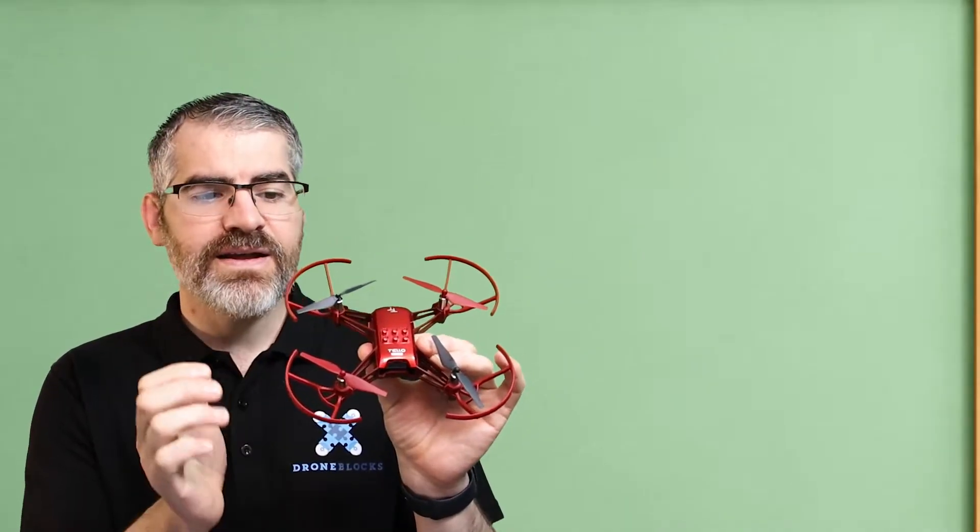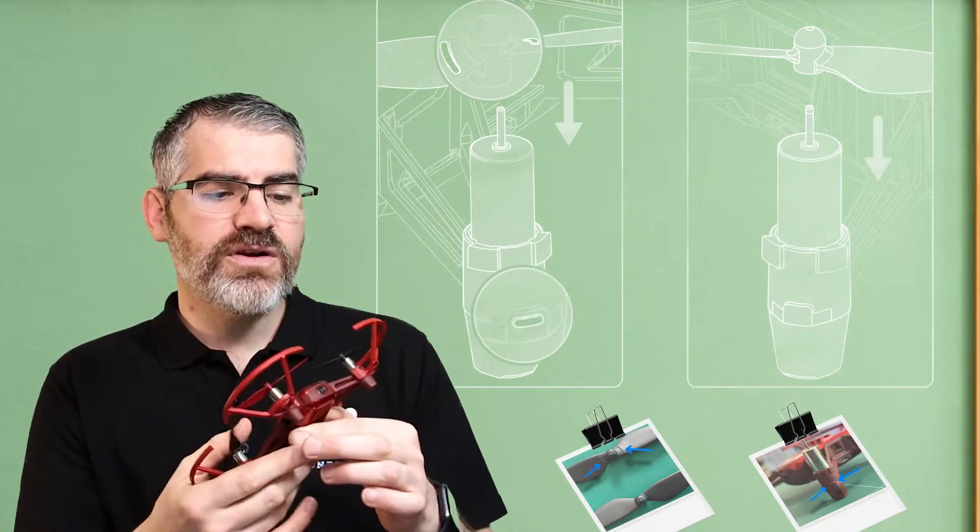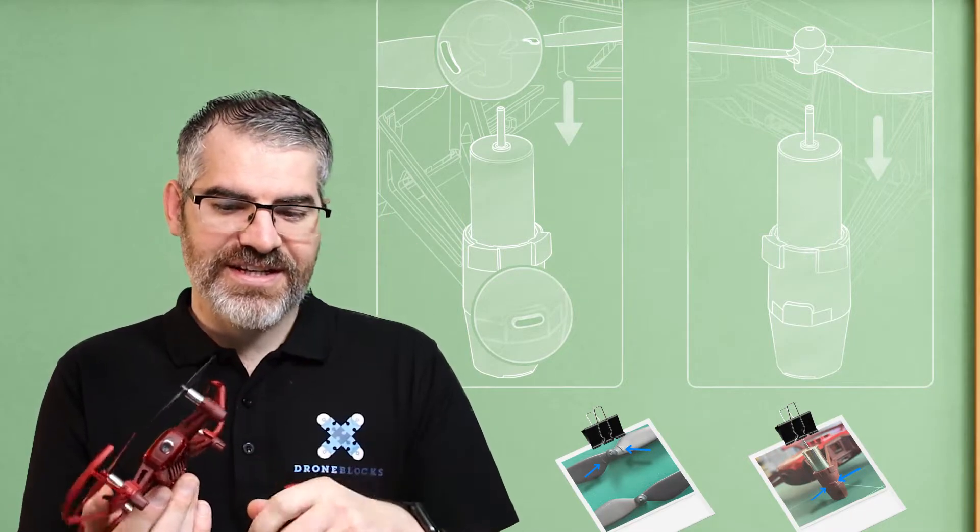There is another indicator. On the actual propeller itself, there's a small little notch. And if you look on the arm, you're going to learn how to take these off in a second.